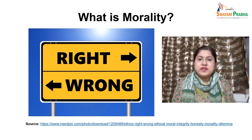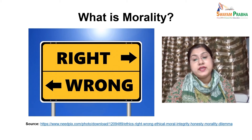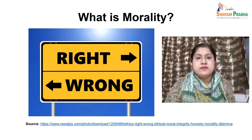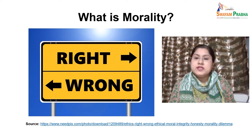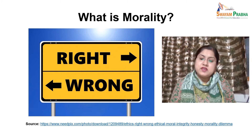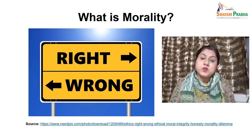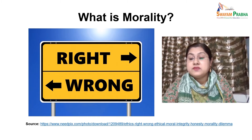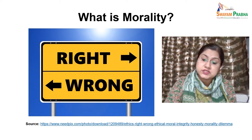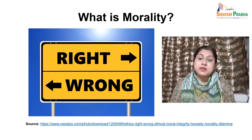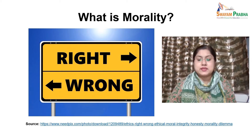Whenever we are talking about this moral development theory of Kohlberg, we have to see what exactly morality is. Morality is basically a recognition of the distinction between good and evil or between right and wrong, then respect for and obedience to the rules of right conduct, the mental disposition or characteristic of behaving in a manner intended to produce good results — all these things can be recognized as morality.